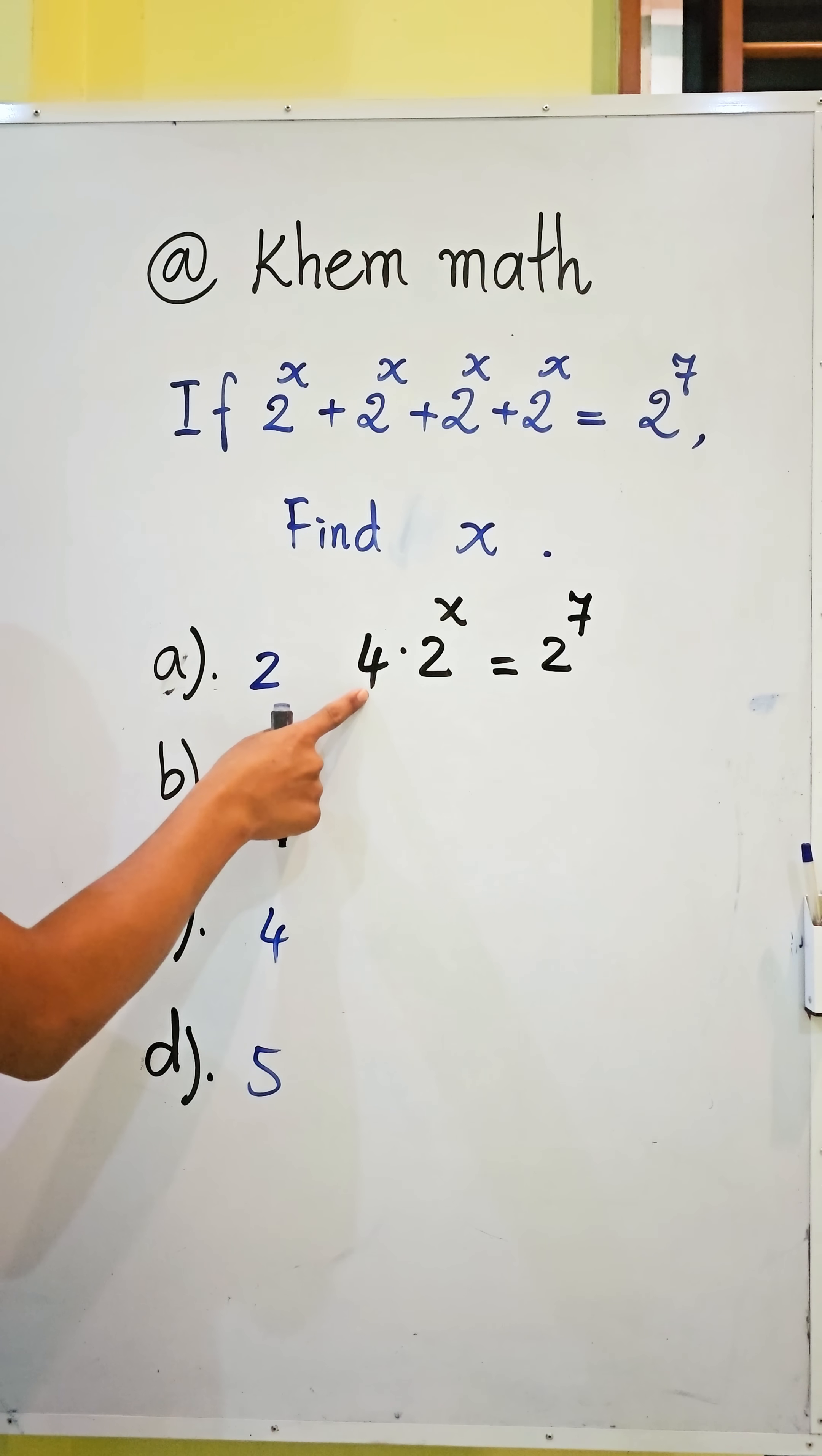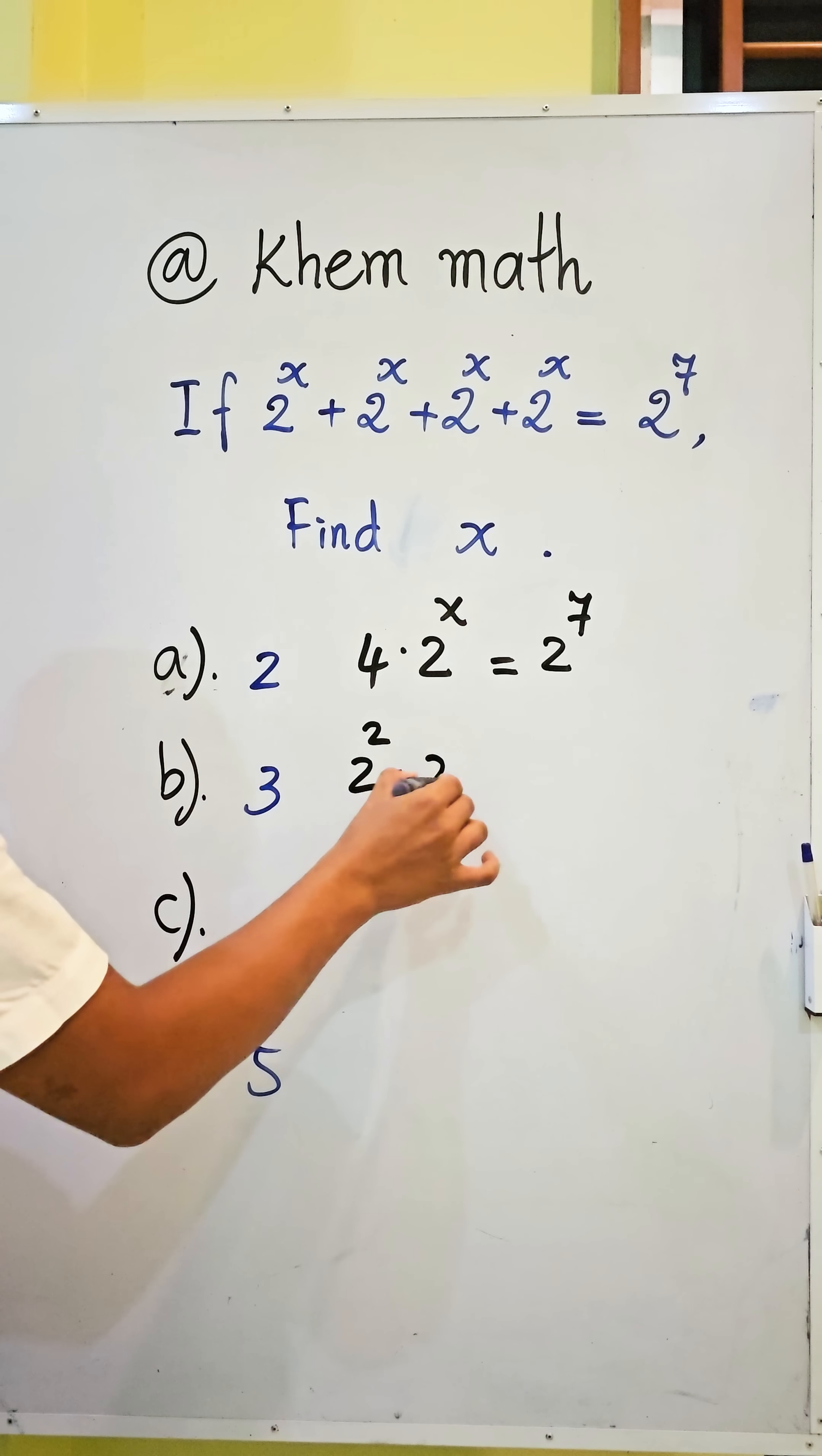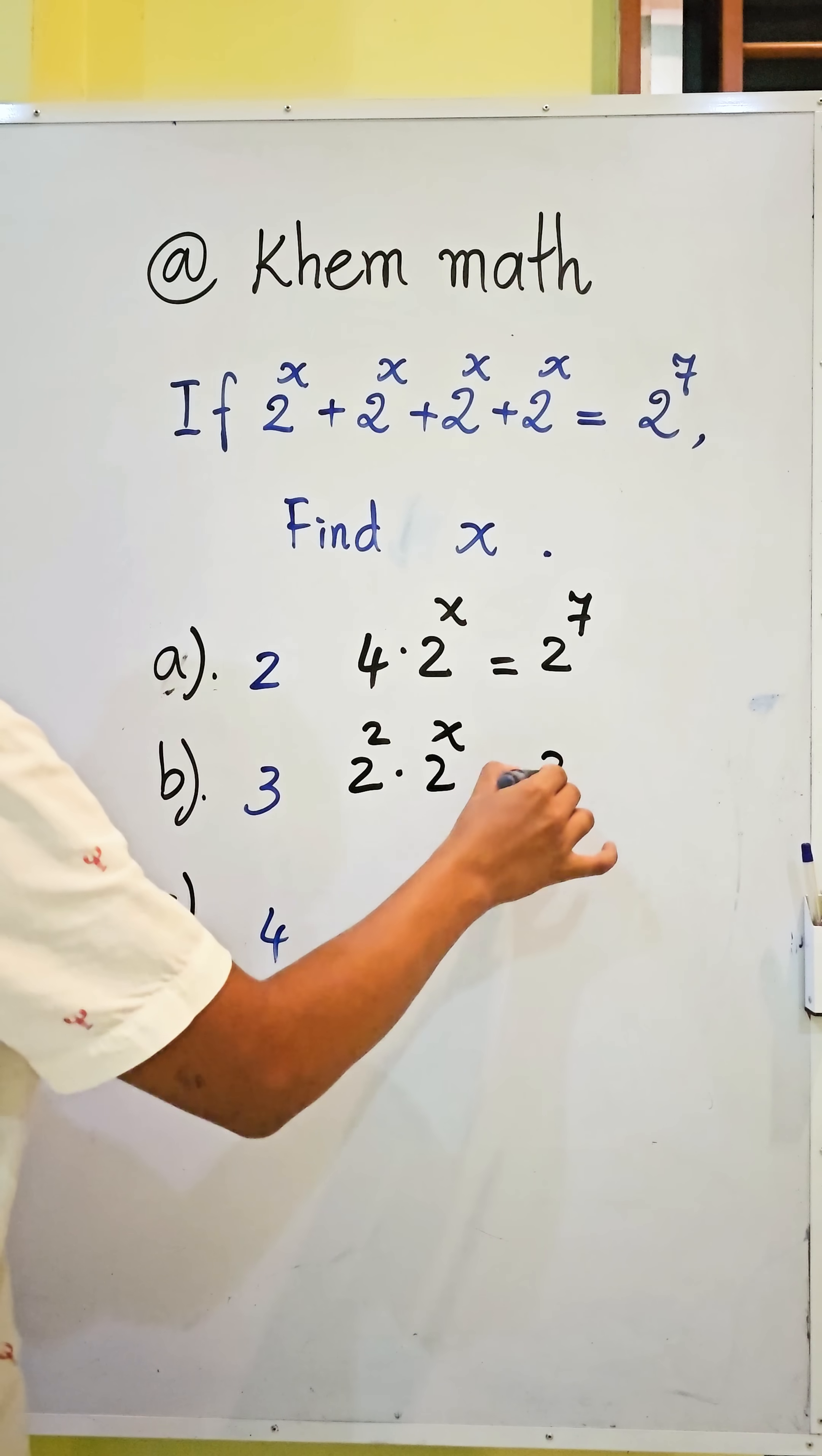And here, 4 can be written as 2 squared, times 2 power x equal to 2 power 7.